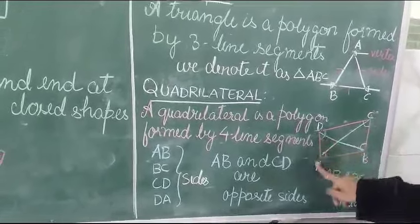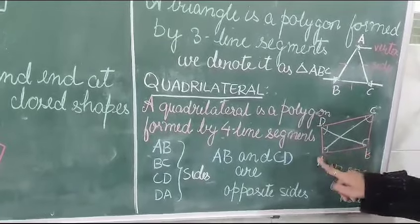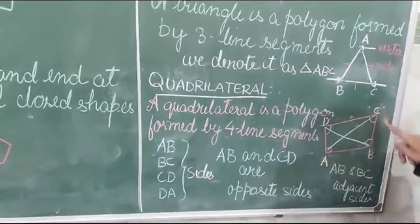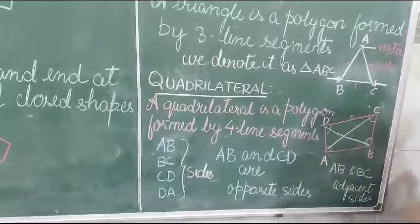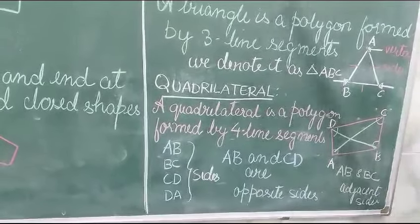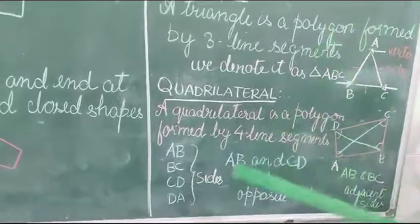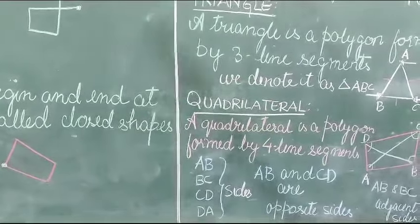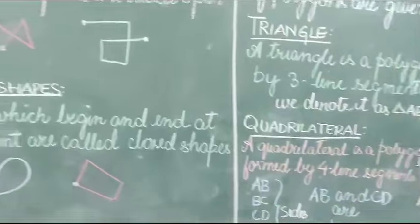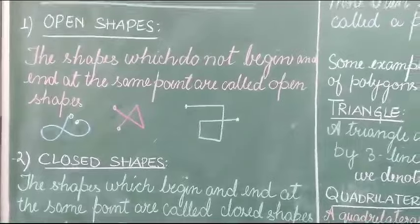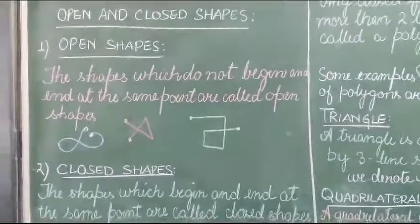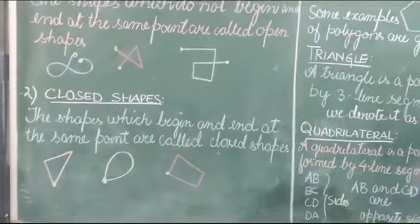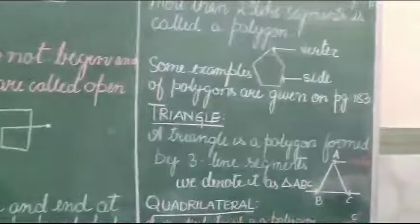Likewise, AD and AB are adjacent sides, and CD and CB are also adjacent sides. This is all about the polygon. Students, now you have to write all these in your math notebook. The work which I am going to send you in your EKL, that also you have to do in your copy. Thank you.